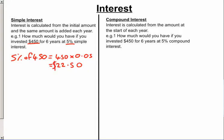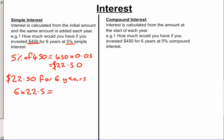For six years, at the end of each year we get $22.50. Because it's simple interest, we get $22.50 for all six years. So six times $22.50 gives us a total of $135. After six years, the bank gives us $135 in total, which means our total amount is what we started with plus what the bank gives us: $450 plus $135 is $585.